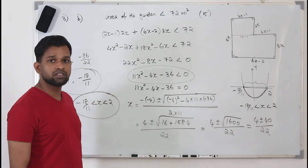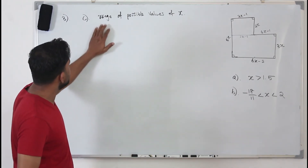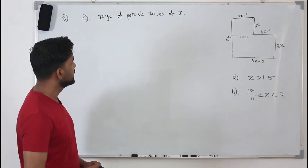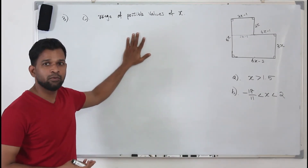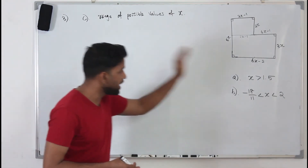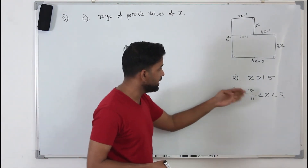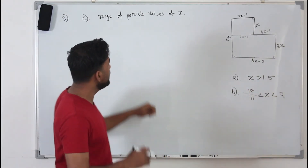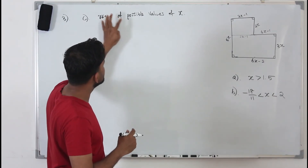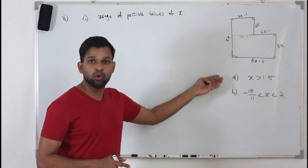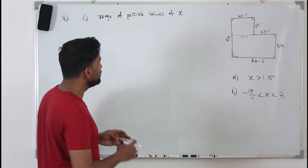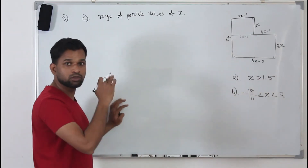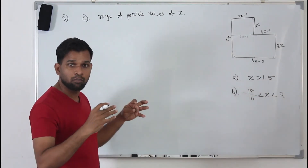Part C asks us to state the range of possible values of x — meaning we need values satisfying both Part A and Part B. From Part A: x is greater than 1.5. From Part B: minus 18/11 less than x less than 2. We draw a number line and plot both solution sets to find their common region.